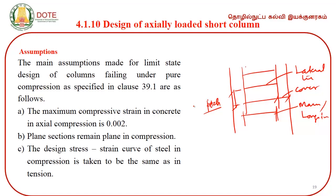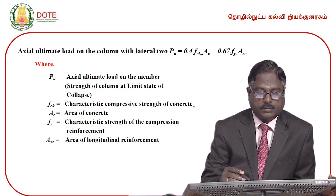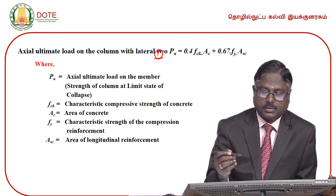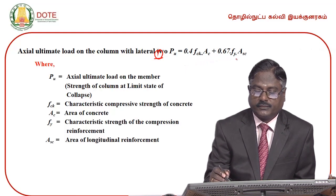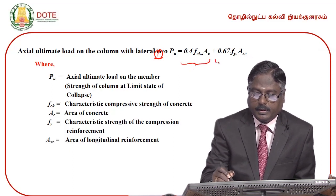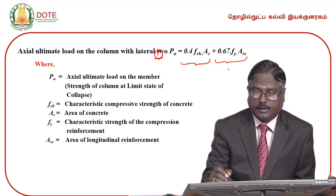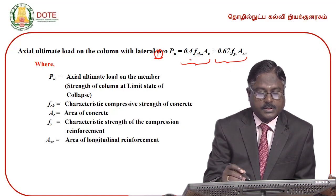The main assumptions in the design of axially loaded short columns are: the compressive strain in concrete in axial compression is 0.002, plane sections remain plane in compression, and the design stress-strain curve of steel in compression is taken to be the same as in tension. The design compressive strength of a column for lateral ties is: Pu = 0.4 × fck × Ac + 0.67 × fy × Asc, where the first term is the contribution of concrete and the second is the contribution of steel.